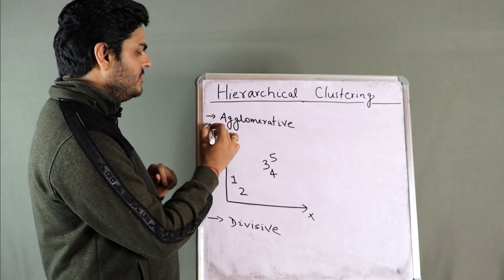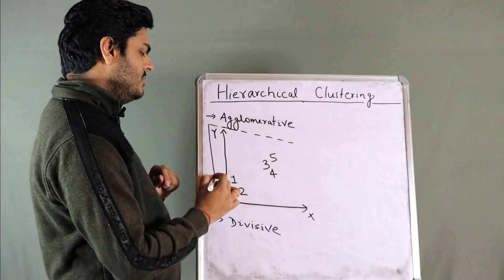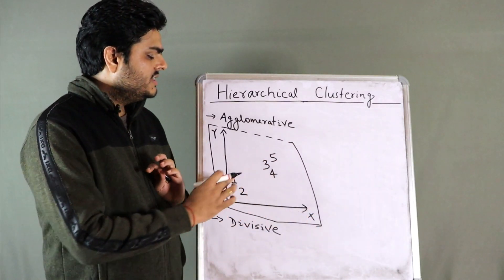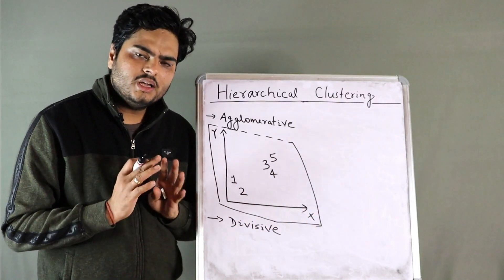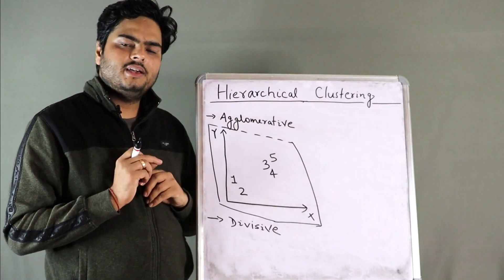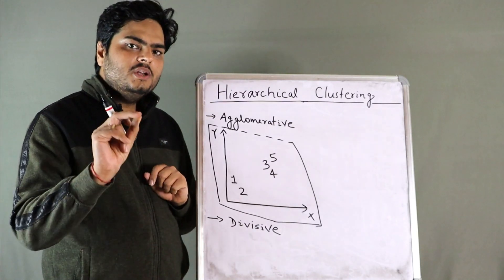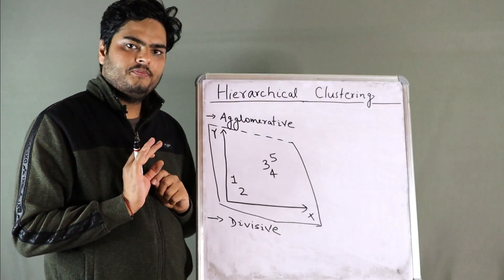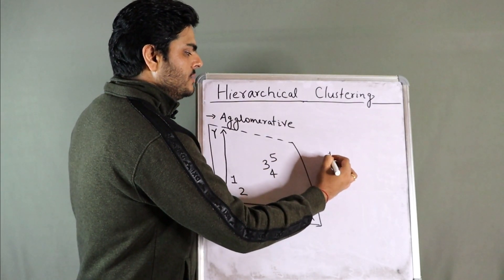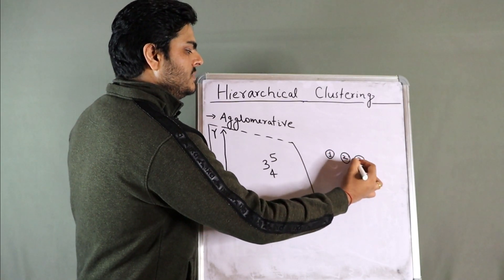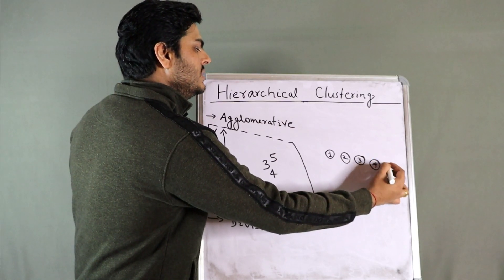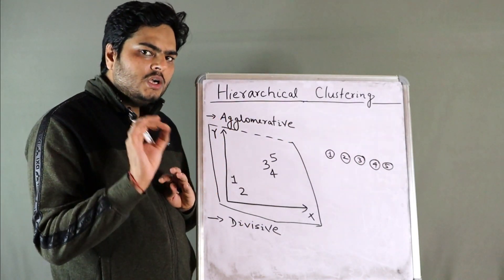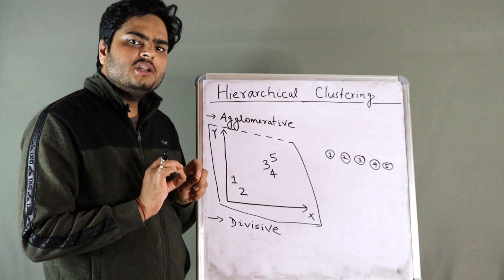In this data I have drawn here, we have five points. In agglomerative clustering, step zero assumes that all these data points are individual clusters — data point one, two, three, four, and five. So in step zero, how many clusters do we have? Five clusters, equal to the number of data points.